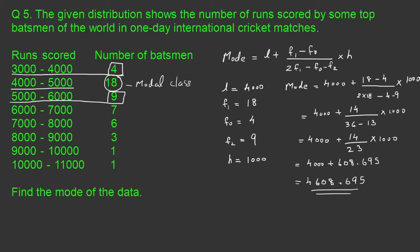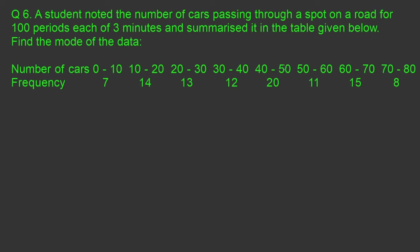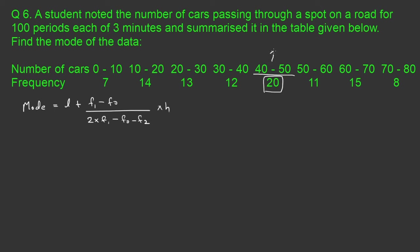Let us do question number 6 in the exercise. A student noted the number of cars passing through a spot on a road for 100 periods each of 3 minutes and summarized it in the table given below. Find the mode of the data. The model class is the class with the maximum frequency. The maximum frequency here is 20, so the modal class is 40 to 50.